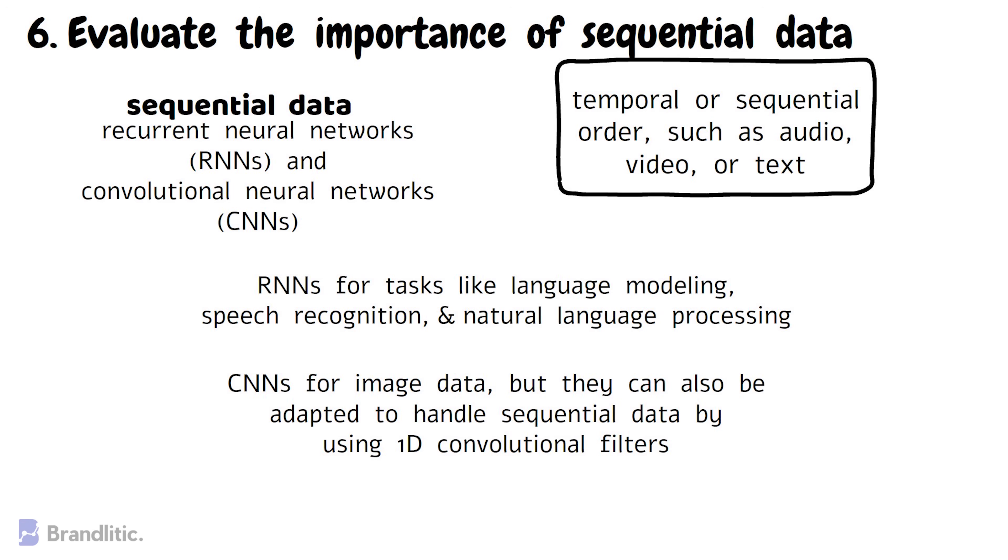For example, in speech recognition tasks, RNNs are often used because they can process the audio data sequentially, maintaining a memory of previous inputs as they go ahead. Similarly, in natural language processing tasks like sentiment analysis or machine translation, RNNs are commonly used because they can process text data in a way that preserves the order of the words.